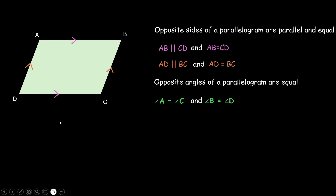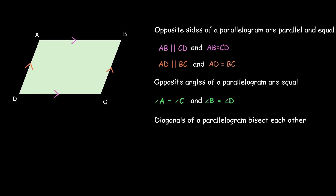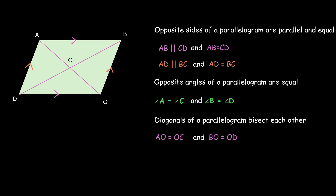Another important property is that the diagonals of a parallelogram bisect each other. Let us draw the diagonals and let them intersect at O. Once we see that they bisect each other, it means that one diagonal divides the other diagonal into two equal parts. So AO is equal to OC and DO is equal to BO.